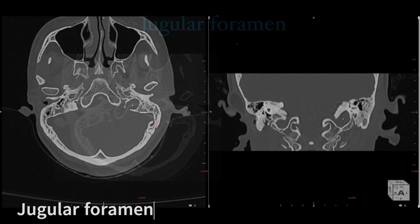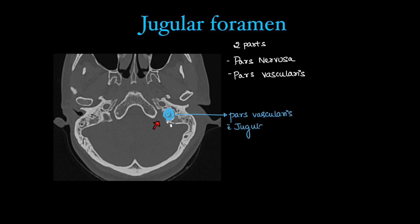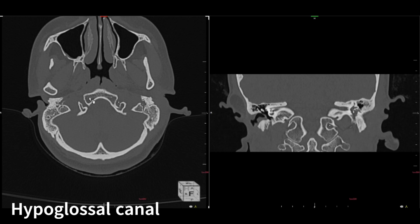Contents depend on the part: pars vascularis posteriorly contains the main jugular bulb and the jugular vein exits the skull through this. Pars nervosa anteriorly contains cranial nerves. We've covered up to CN VIII; cranial nerves IX, X, and XI pass through the jugular foramen — the glossopharyngeal nerve (IX), vagus nerve (X), and accessory nerve (XI).